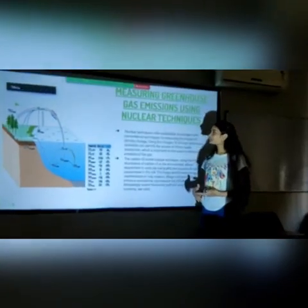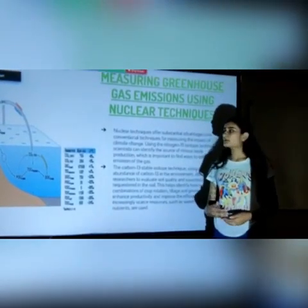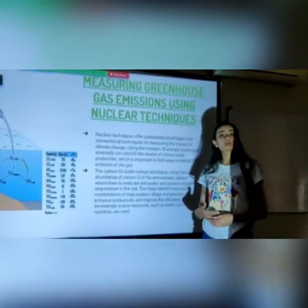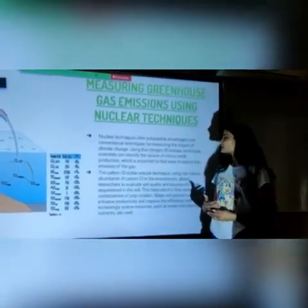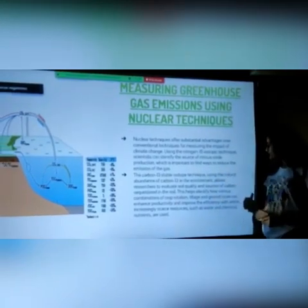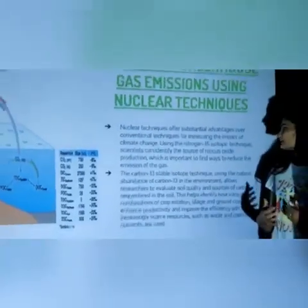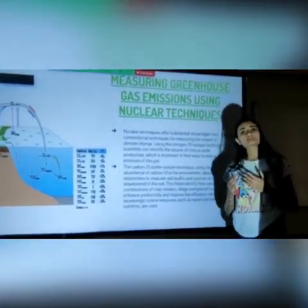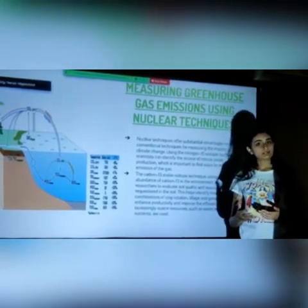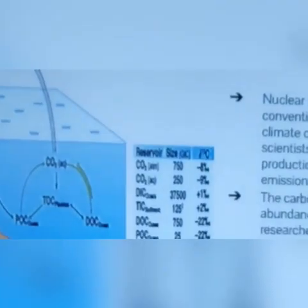First, I would like to talk about measuring greenhouse gas emissions using nuclear techniques. Nuclear techniques offer substantial advantages over conventional techniques for measuring the impact of climate change. Using the nitrogen-15 isotopic technique, scientists can identify the source of nitrous oxide reduction, which is important to find ways to reduce the emission of this gas. Similarly, for carbon, we use the carbon-13 stable isotope technique.